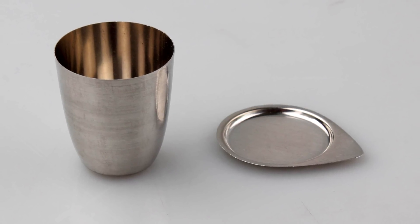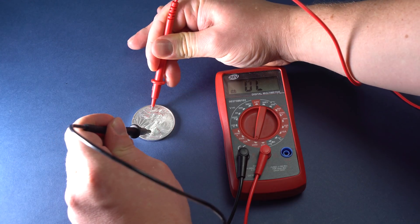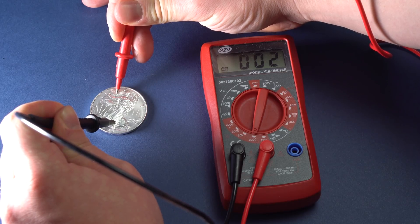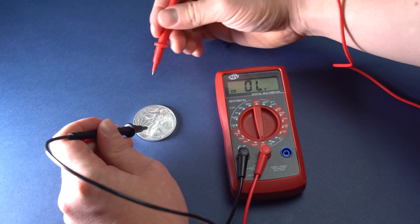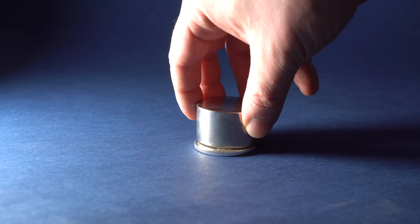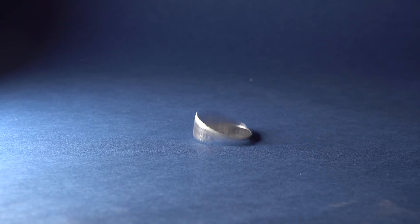Besides having the highest thermal conductivity, silver also has the lowest electrical resistivity. That is why it conducts electricity even better than copper does.